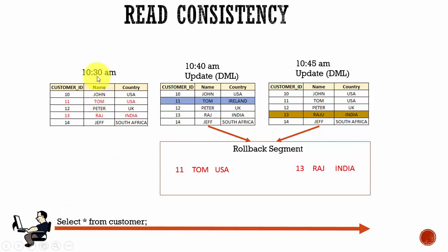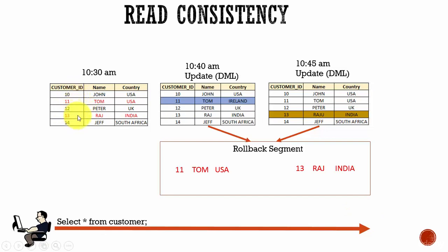What Oracle database will do is: the three rows which are in black (not modified) will be returned as-is at 10:45 a.m. The two rows — customer ID 11 and customer ID 13 — since they are modified, it doesn't read from the table. Instead, it goes back to the rollback segment and returns those two rows. In this way the user can get all the rows exactly as they were at 10:30 a.m.